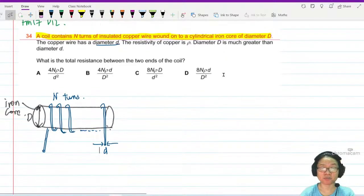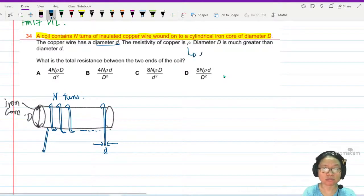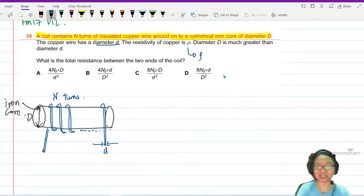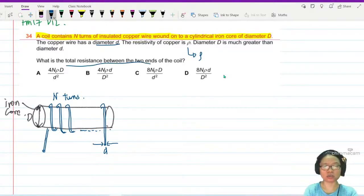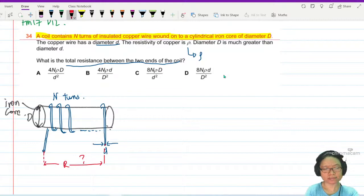Resistivity of copper is rho. Okay, diameter d is much greater than diameter of wire. You don't say. Total resistance between the two ends of the coil. Okay, so meaning I want to know if let's say I connect this point, the two ends of the coil to here, what is the resistance?